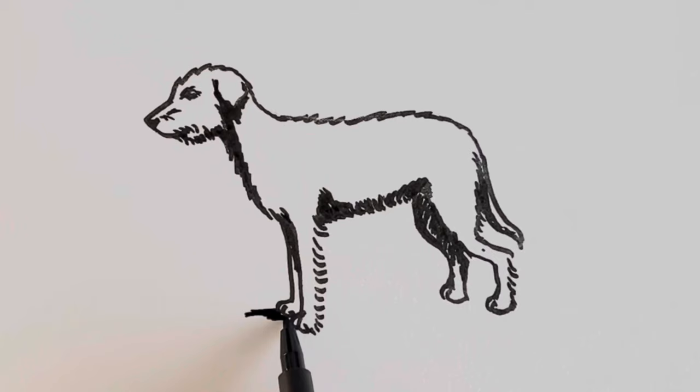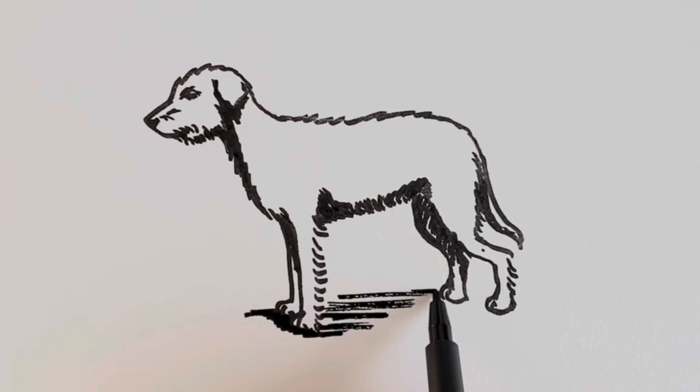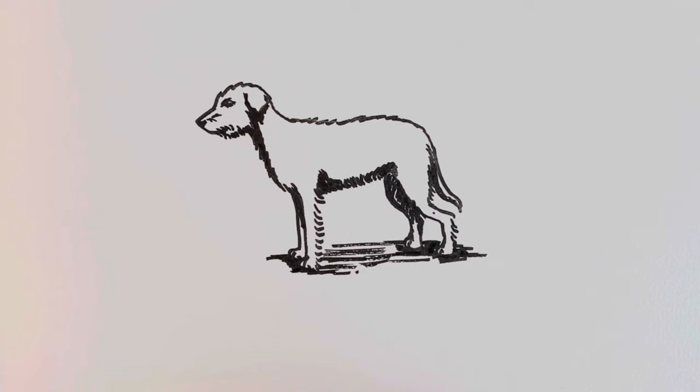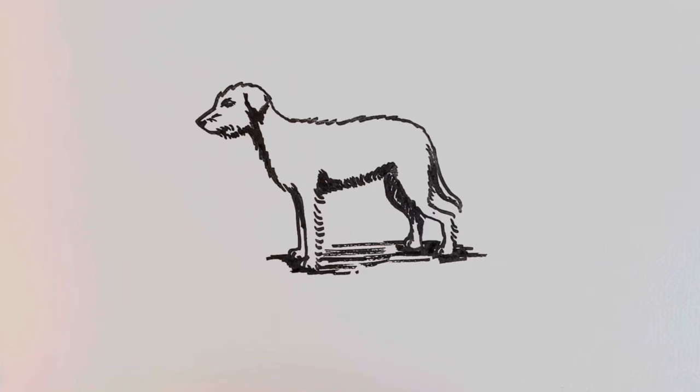And then we're going to be drawing just a little bit of shadow underneath the dog, just with some horizontal lines, to show that it's not floating in the air. And there's your finished super simple Bedlington Whippet. If you've enjoyed this one, you're going to absolutely love the whole playlist of dogs. So get drawing now.